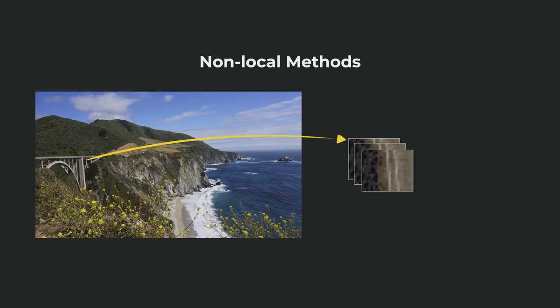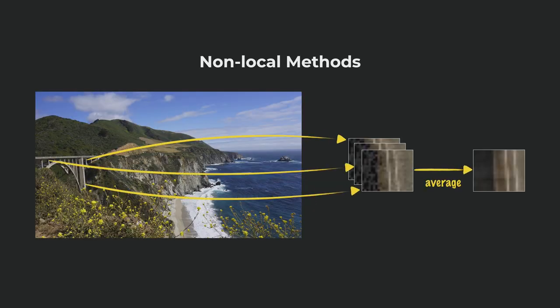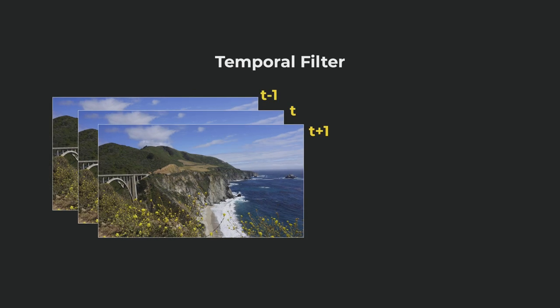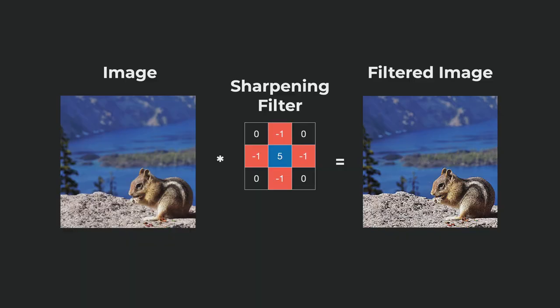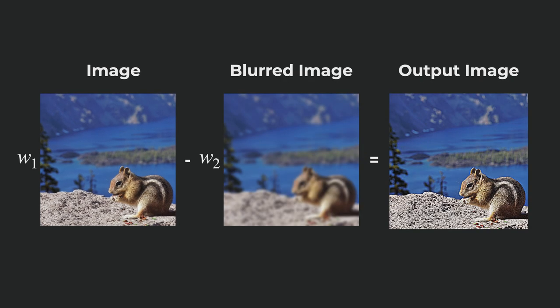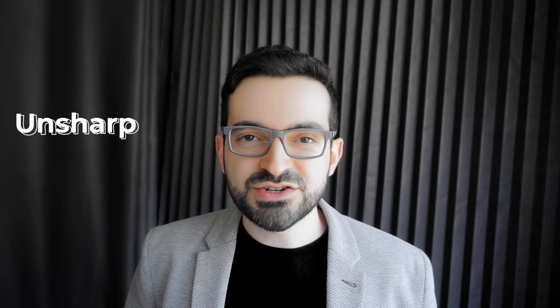There are also more advanced algorithms such as non-local methods, which make use of similar parts of the image that are not necessarily neighbors. There are also temporal denoisers, which use information from other frames in the same video. Blurring an image has its use cases such as reducing noise, enhancing skin, or creating a fake depth of field effect. We can sharpen an image using an image kernel just like the ones used for blurring — by assigning a negative weight to neighbor pixels. We can also subtract the blurred version from the original image with some weight to enhance local contrast. This is called unsharp masking.